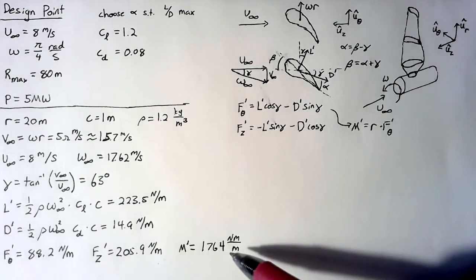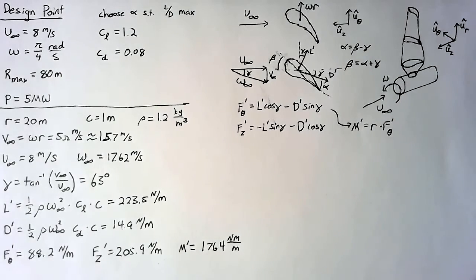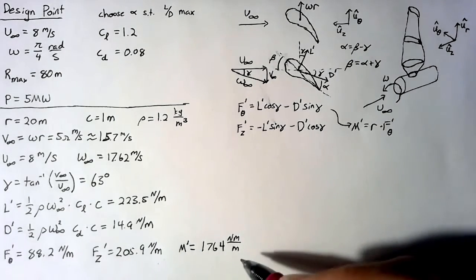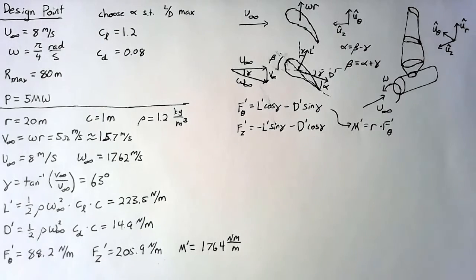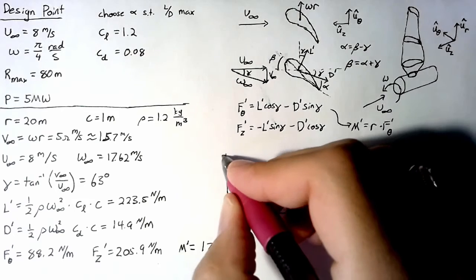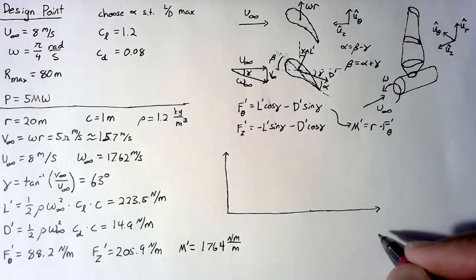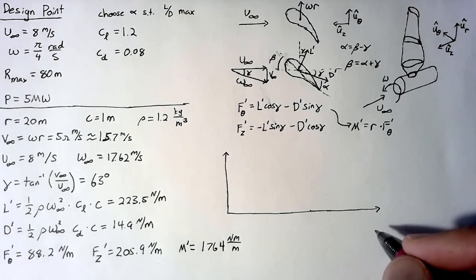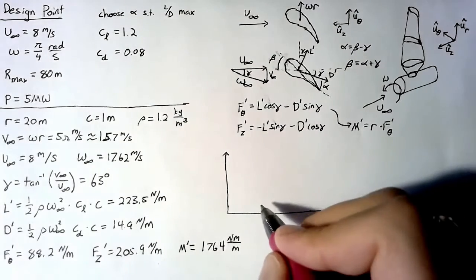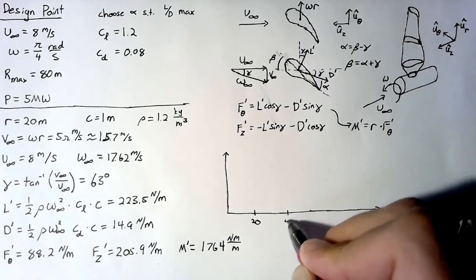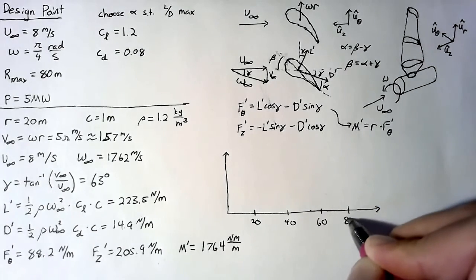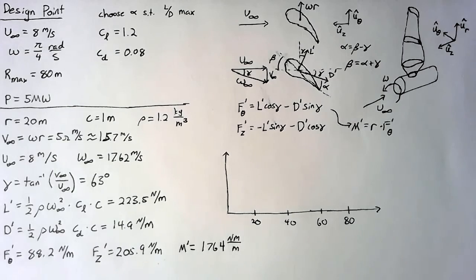This is not enough to calculate the power, which is what we're aiming for. So the next step is to calculate this for a number of other radius positions, and then integrate. Now we could probably go through the work and actually calculate an equation as a function of r, but honestly, it's just a lot simpler and not that inaccurate to find a couple of values and integrate this using numerics. So we're going to be choosing a number of values. I'm just going to choose 4 here: 20, 40, 60, and 80. And calculate the moments at each of these points.